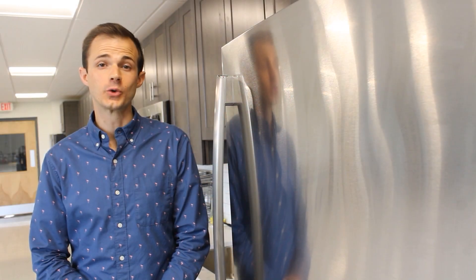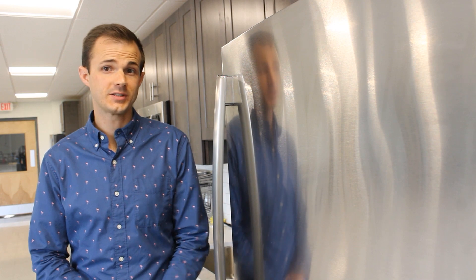To do that, we're going to the kitchen. Refrigerator doors are easy to open because they pivot on a hinge.